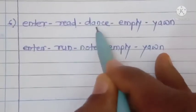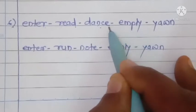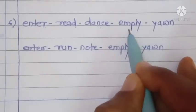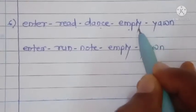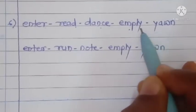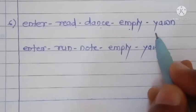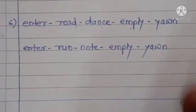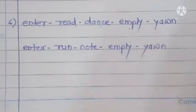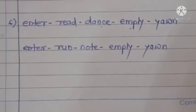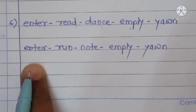Verb beginning with 'd' — dance. Verb beginning with 'e' — empty (meaning to make empty). Verb beginning with 'y' — yawn. For 'e' and 'y', there may be some doubt, but you should have verbs beginning with 'e' and 'y' prepared. One more example is given — another example is added.